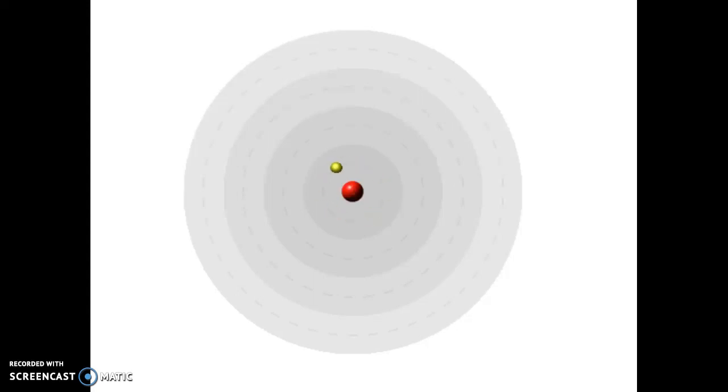This is a model of the Bohr atom. We can see a nucleus with an electron whizzing around at a low energy level. Around the atom we can also see some higher energy levels drawn.